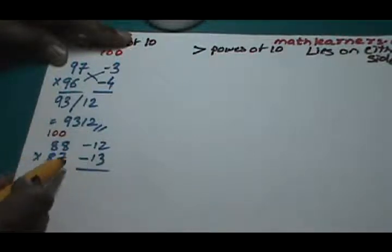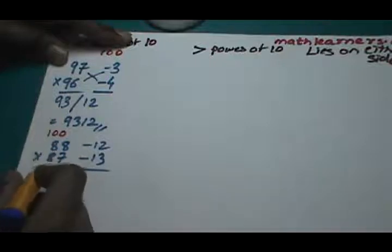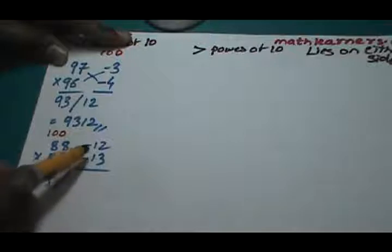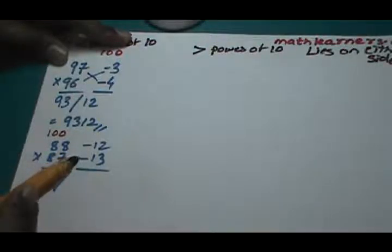We do cross addition: 88 minus 13 or 87 minus 12. Either of them will give 75, slash. Multiplication of right hand side gives us 156.